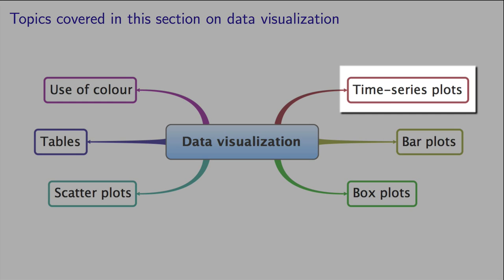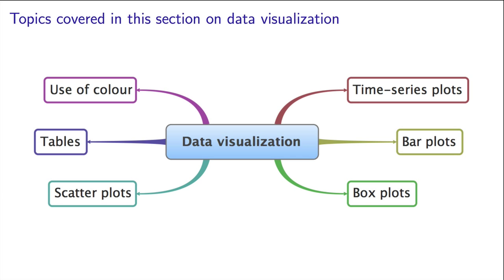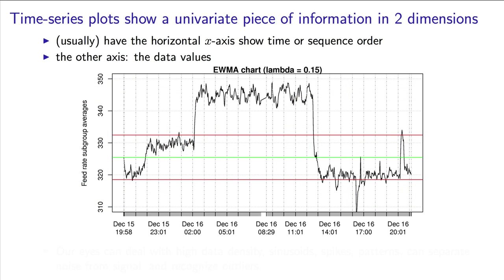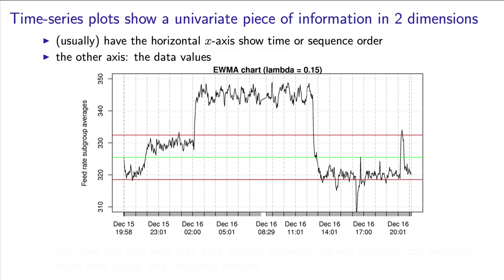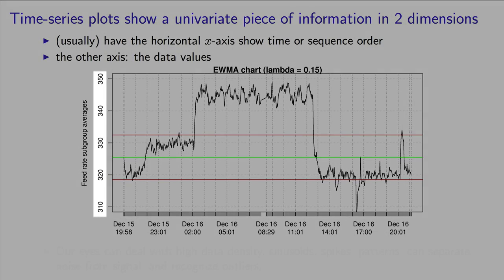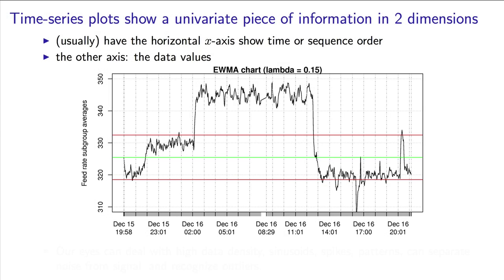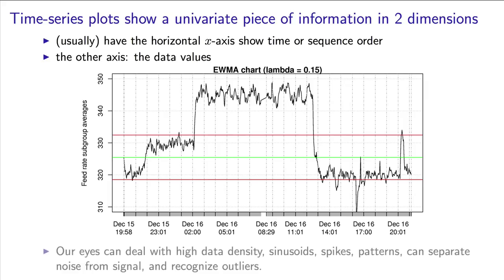The first plot we consider is a time series plot. These are two-dimensional, with a horizontal time axis or sequence order. The vertical axis represents the numeric value of the data. Our eye is good at dealing with high density data — our brains quickly process this and we pick up sinusoids, spikes and other patterns. We also separate noise from the signal, and we quickly disregard outliers which contaminate the data.